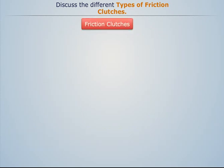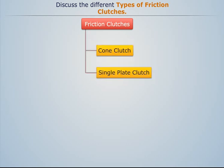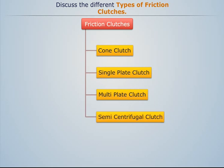Friction clutches can be further classified into five types: cone clutch, single plate clutch, multi-plate clutch, semi-centrifugal clutch, and centrifugal clutch. Now let's discuss each one by one.